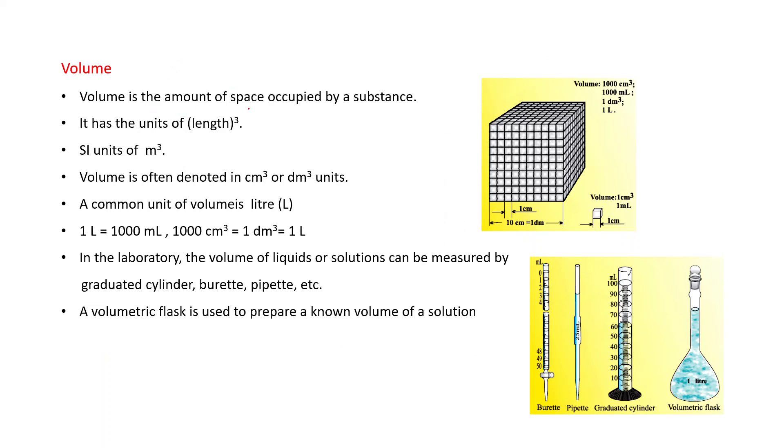Volume. Volume is the amount of space occupied by a substance. And it has the unit of length cube. And SI unit of length is meter. That is why SI unit of volume is meter cube. But generally, volume is denoted in centimeter cube or decimeter cube. But common unit of volume is liter.